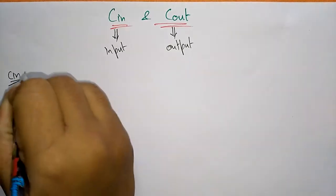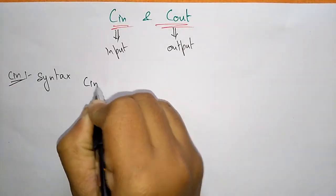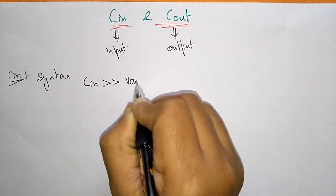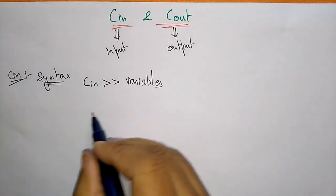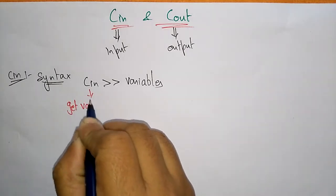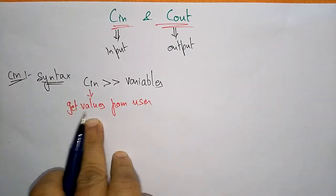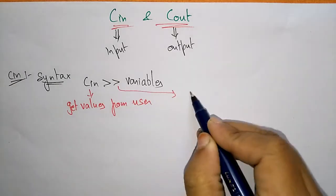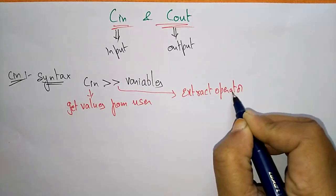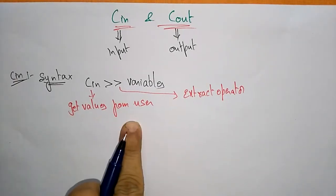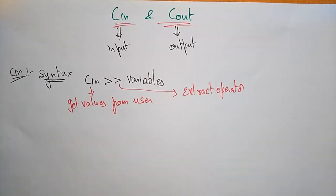The syntax for cin is: cin followed by the variable name. cin is used to get values from the user — this is called the extraction operator. The extraction operator extracts values from the user, getting the values from the user. Here, these are the variables; just declare the variable so that the user provides values.